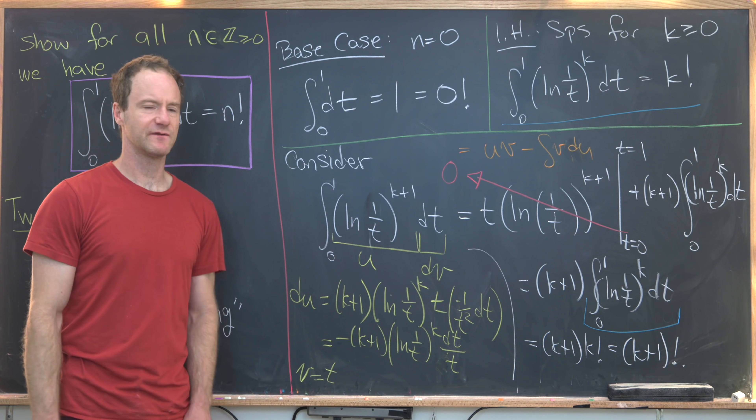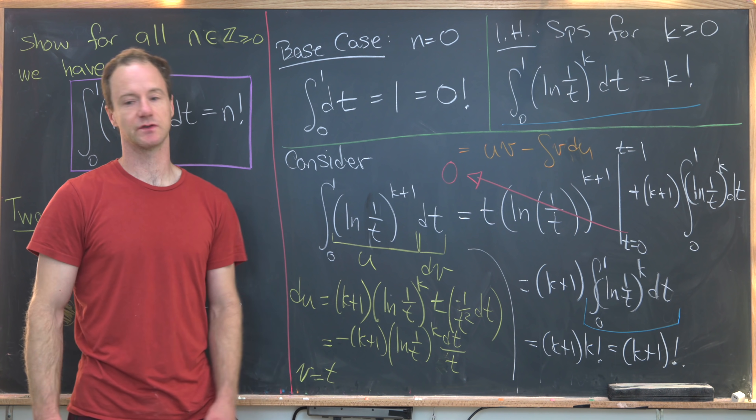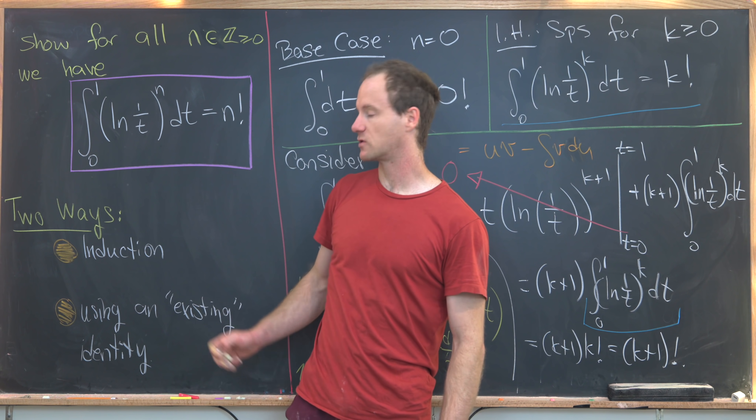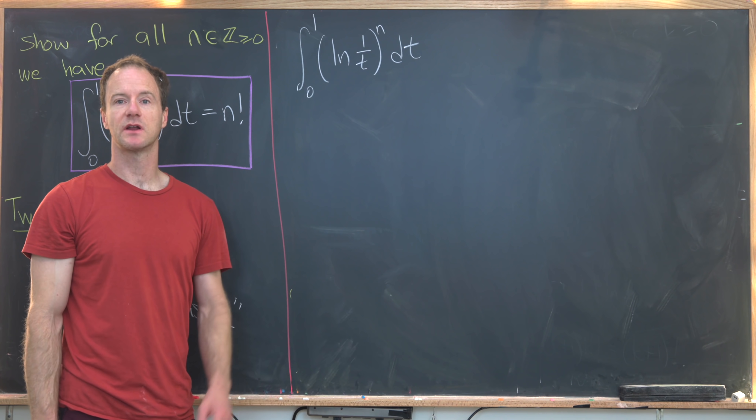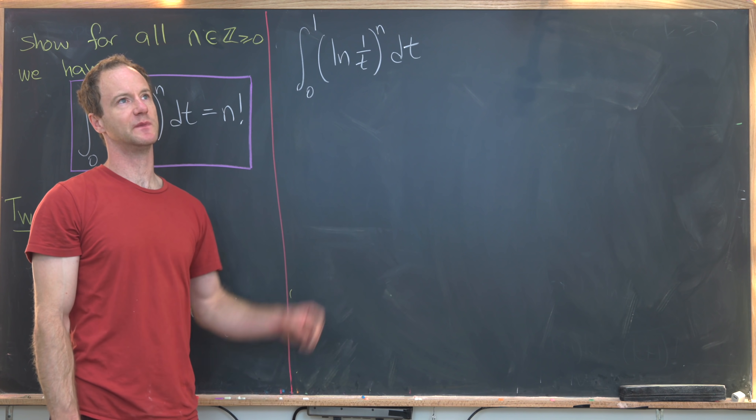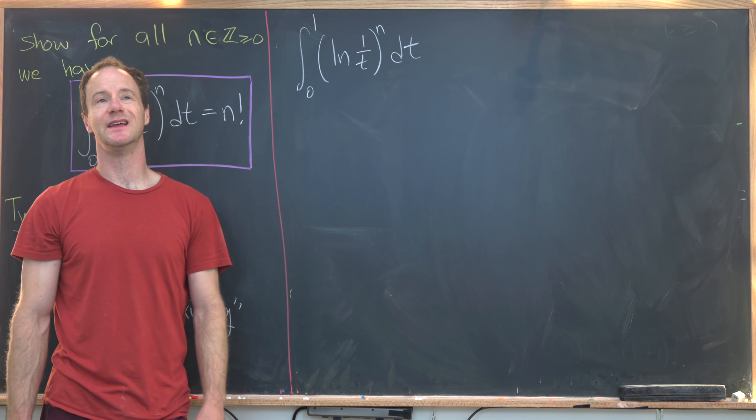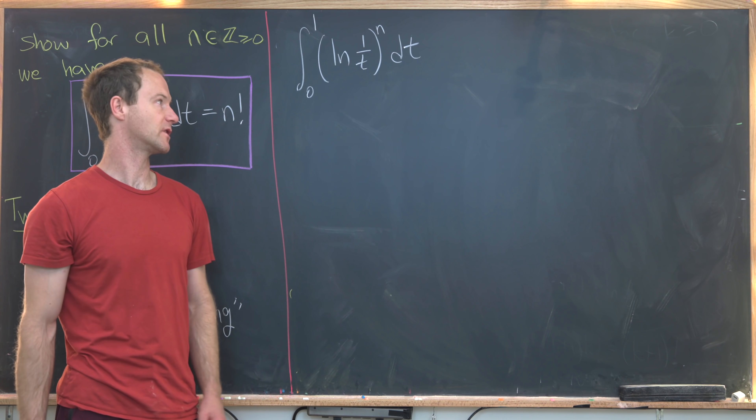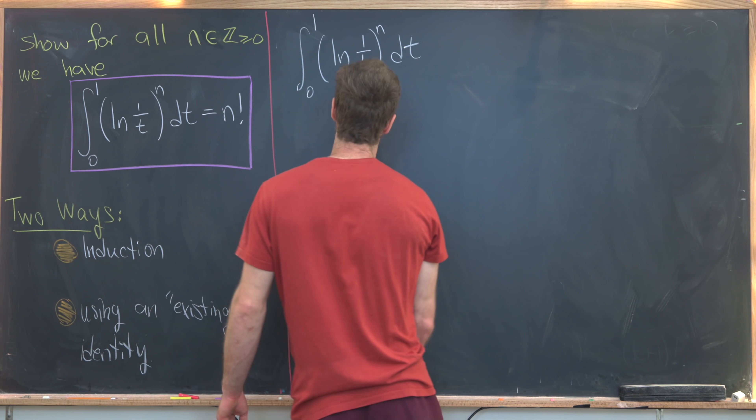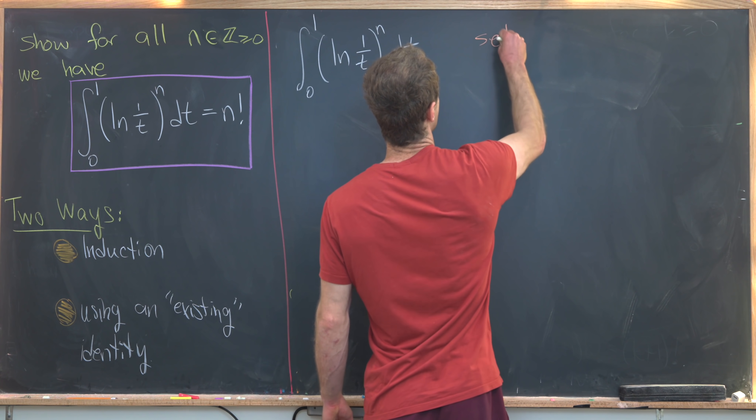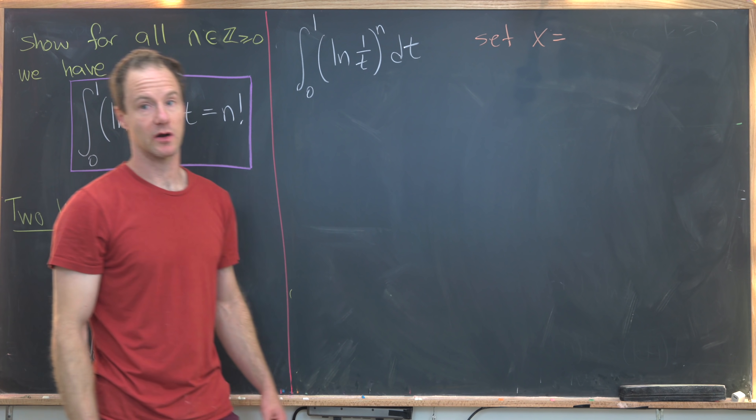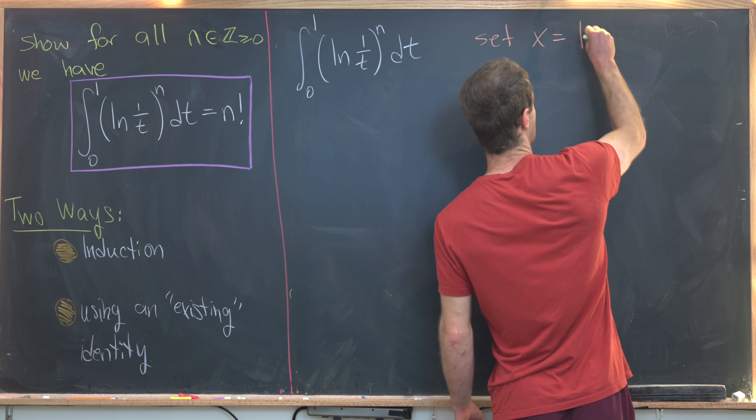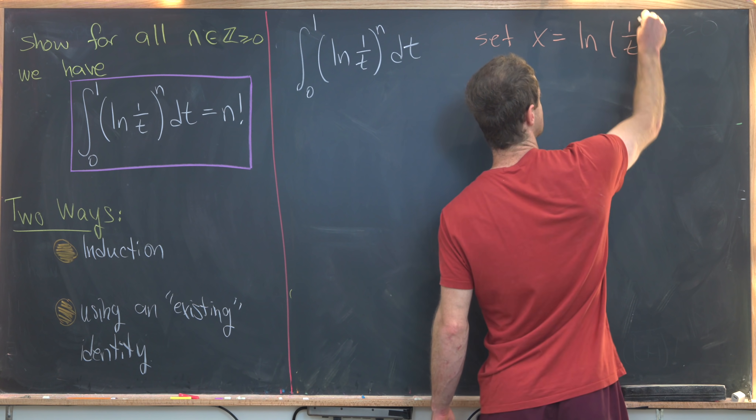Let's get rid of this, and then we'll do a shorter solution that transforms this integral into an existing identity. Now we're going to look at our second solution, which will transform this using a substitution into a more familiar integral identity. Let's go ahead and set x equal to maybe what I would call the complicated part of this integrand, which would be the natural log of 1 over t.